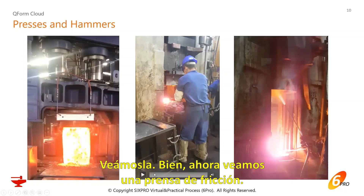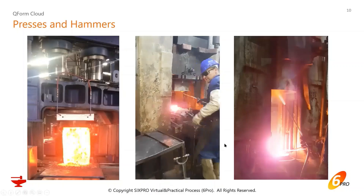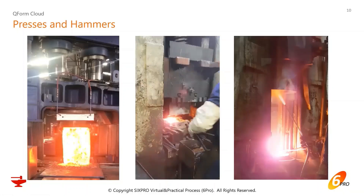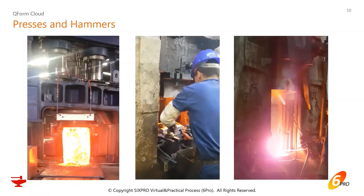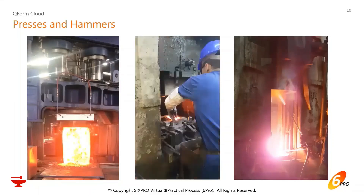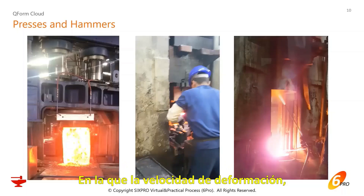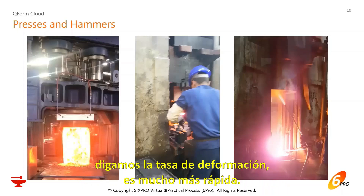Now let's see a friction press — it's faster. And now we can see a hammer working, in which the deformation speed — the strain rate — is much faster.